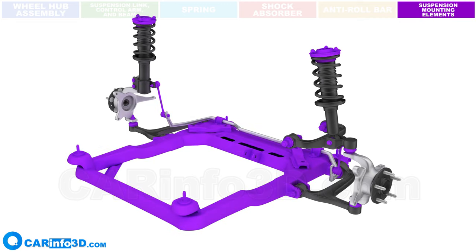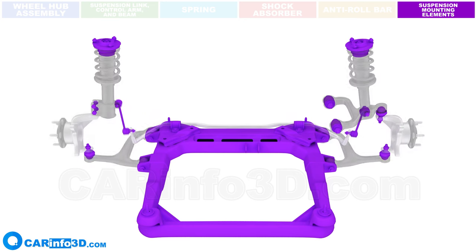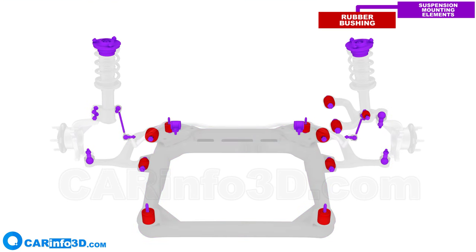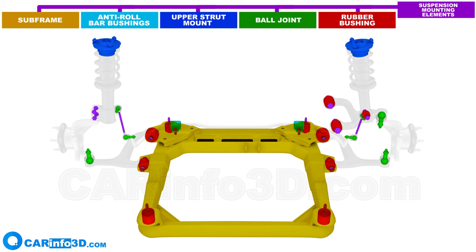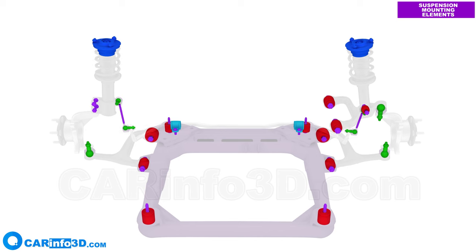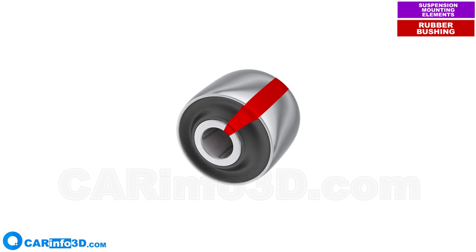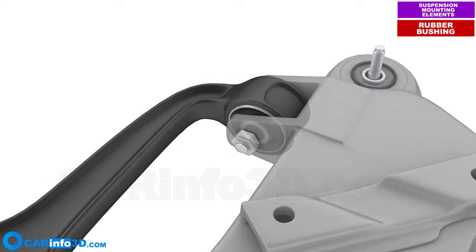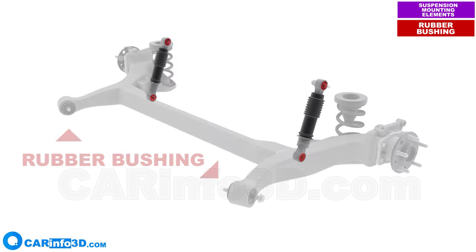Suspension mounting elements connect all suspension components to each other, the body, or frame. Since many parts of the suspension move relative to each other, most employ flexible joints, comprising rubber bushings, ball joints, upper strut mounts, and anti-roll bar bushings. The subframe is used as an intermediate fixture element. A rubber bushing is made up of two metal sleeves joined by a rubber insert. The rubber insert gives the bushings the appropriate stroke for the design and allows them to partially dampen the suspension's vibrations. Rubber bushings are fitted into another component and the inner sleeve is bolted, and are found in various suspension parts such as arms, torsion beams, shock absorbers, and the subframe.